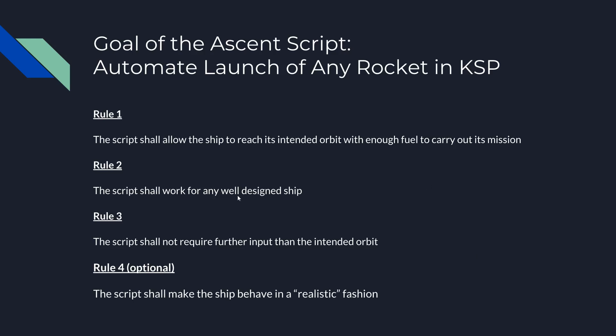The second rule is the script shall work with all well-designed ships, so if a ship is not able to make it physically or kinematically, then it's out. The third rule is it shall not require further input beyond the intended orbit, and that's just to make sure this is an automated script — not something I have to mess with every time. I can just run it and go back to the drawing board if needed.